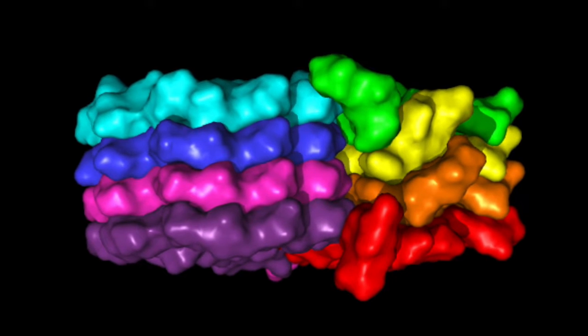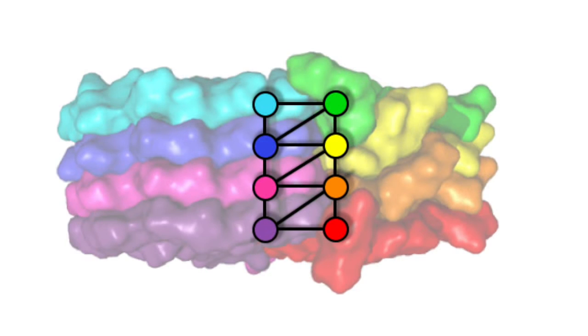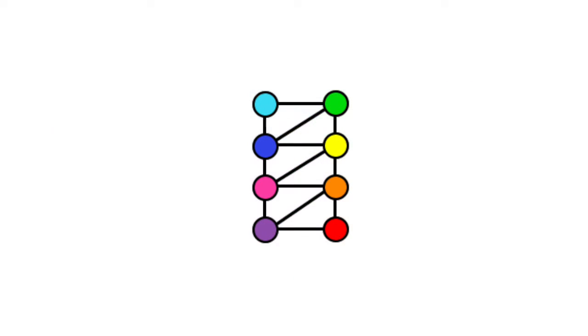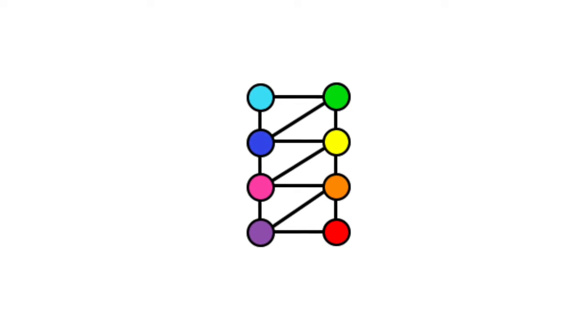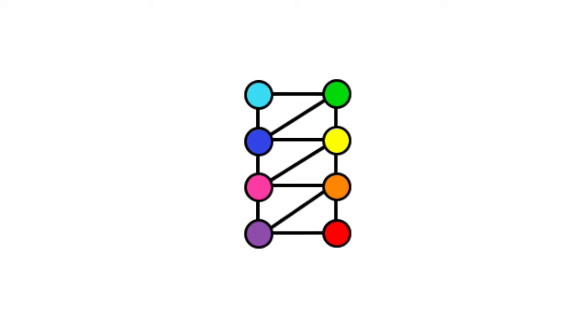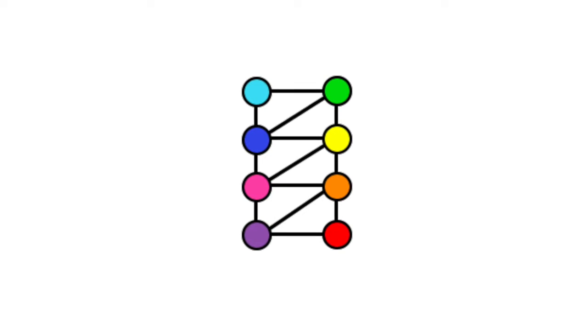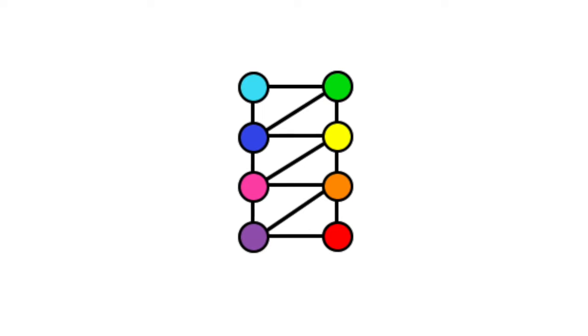For the fibril shown here, this gives us something like this. This representation is called a graph. The nodes, or vertices of the graph, correspond to protein monomers, and the edges, or ties, between nodes indicate pairs of monomers that are directly bound to each other. In this particular fibril, this graph forms a truss-like structure that we call a 1-2-2 ribbon.